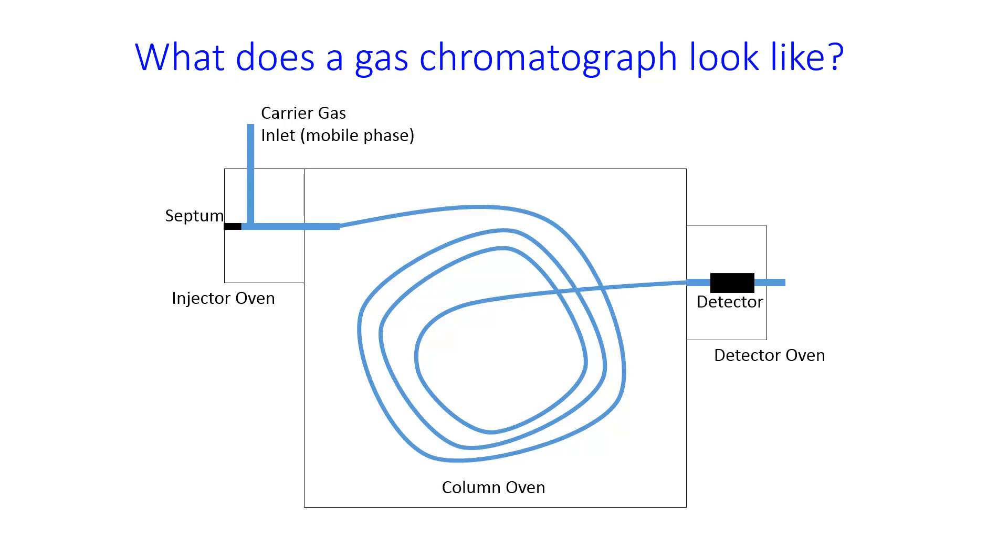After the column, the separated species go onto the detector, which is also kept at a high temperature so that nothing condenses inside of it, and then the signal from the detector is read by a computer and plotted as peaks. On the x-axis is time, and on the y-axis is the amount of signal. As they go through the chromatography column, the species are separated in space and time, and so they come out of the column at different times, depending on their boiling points.